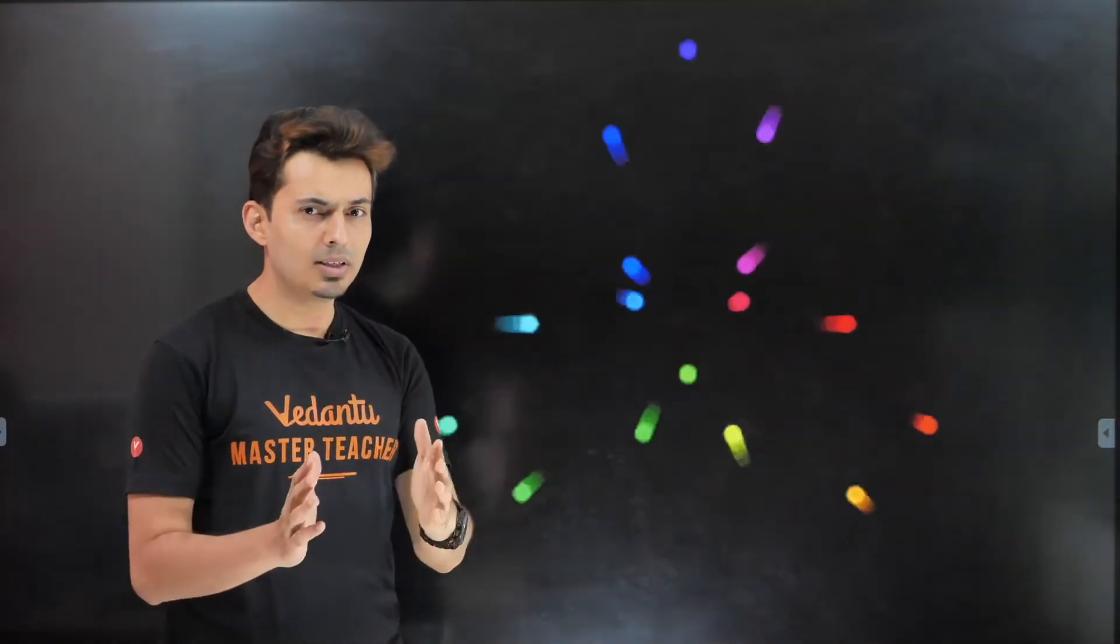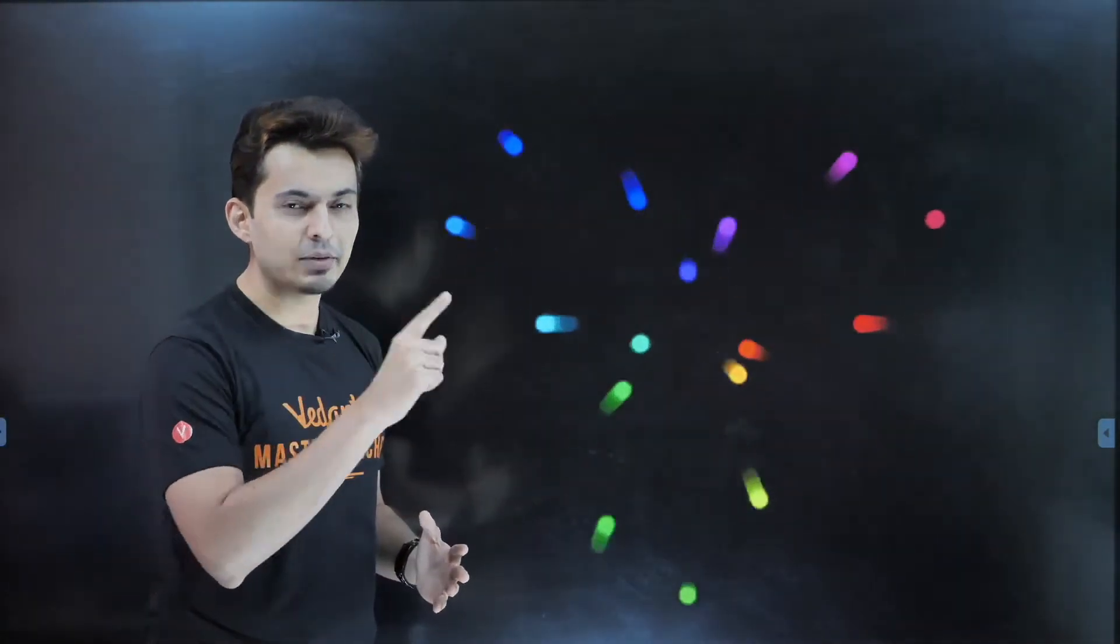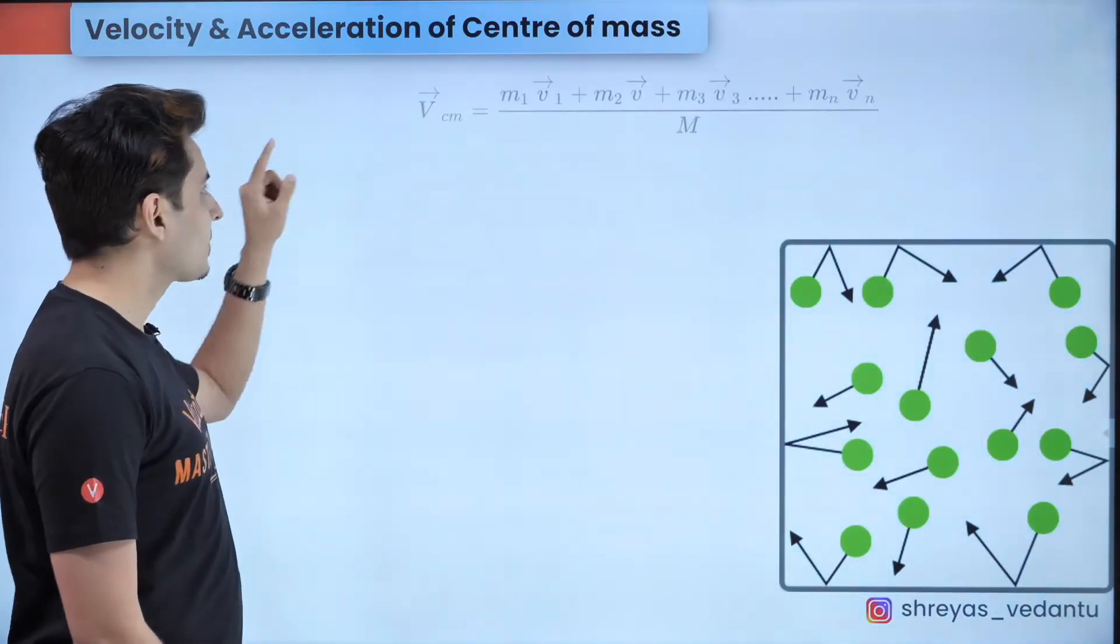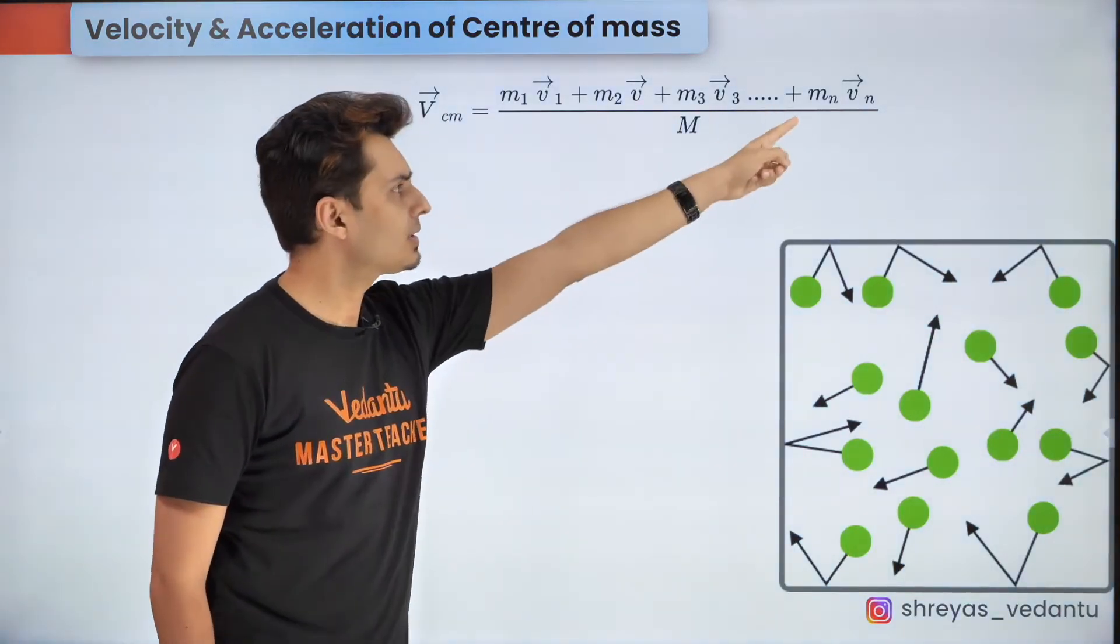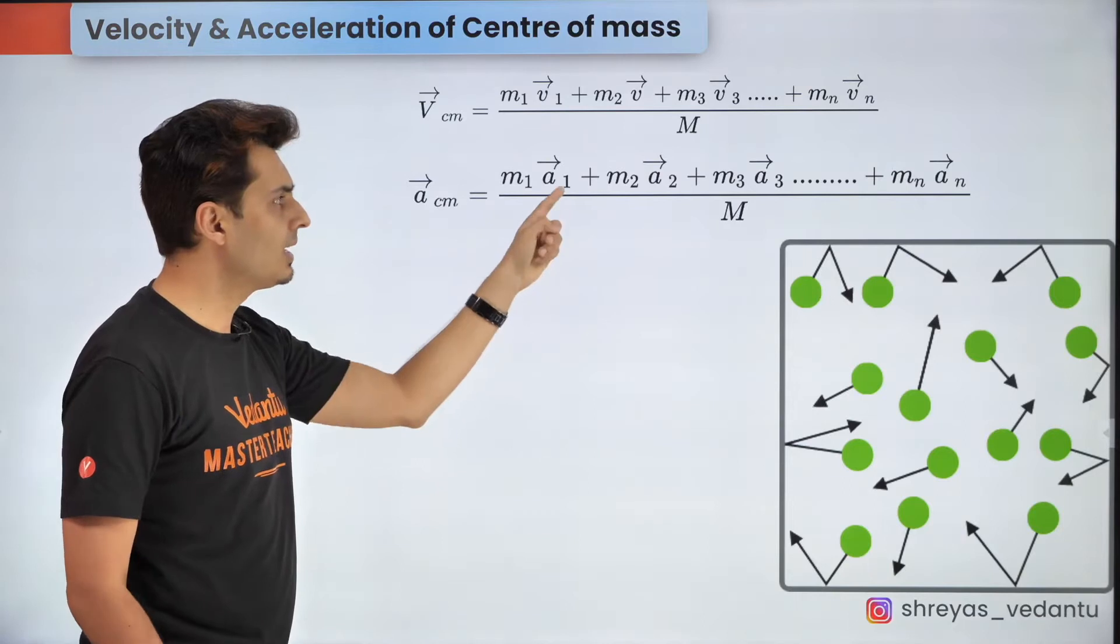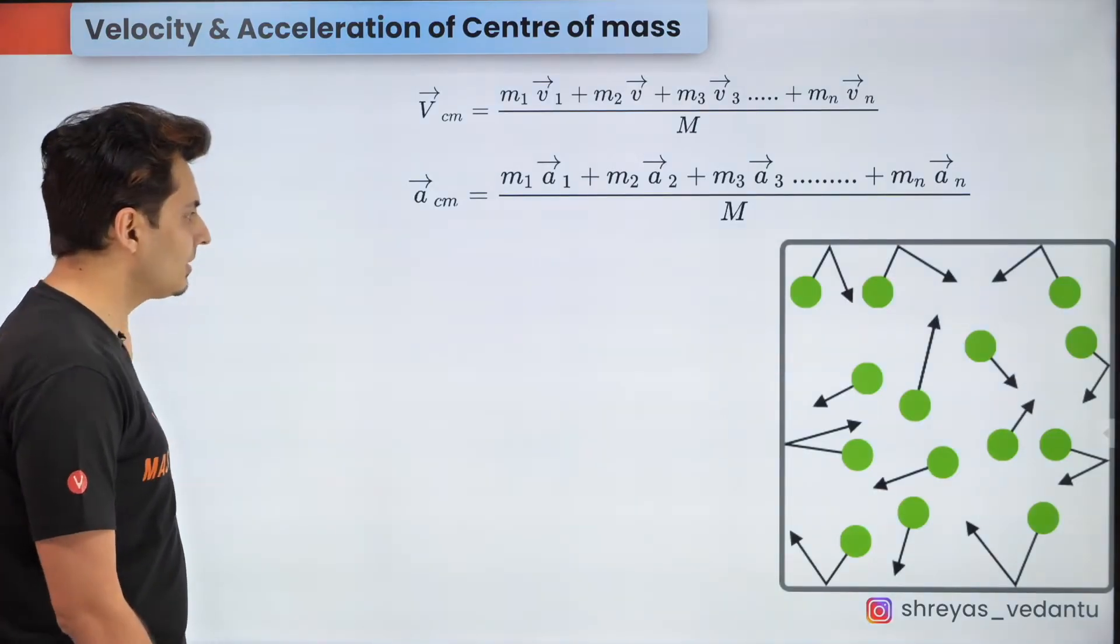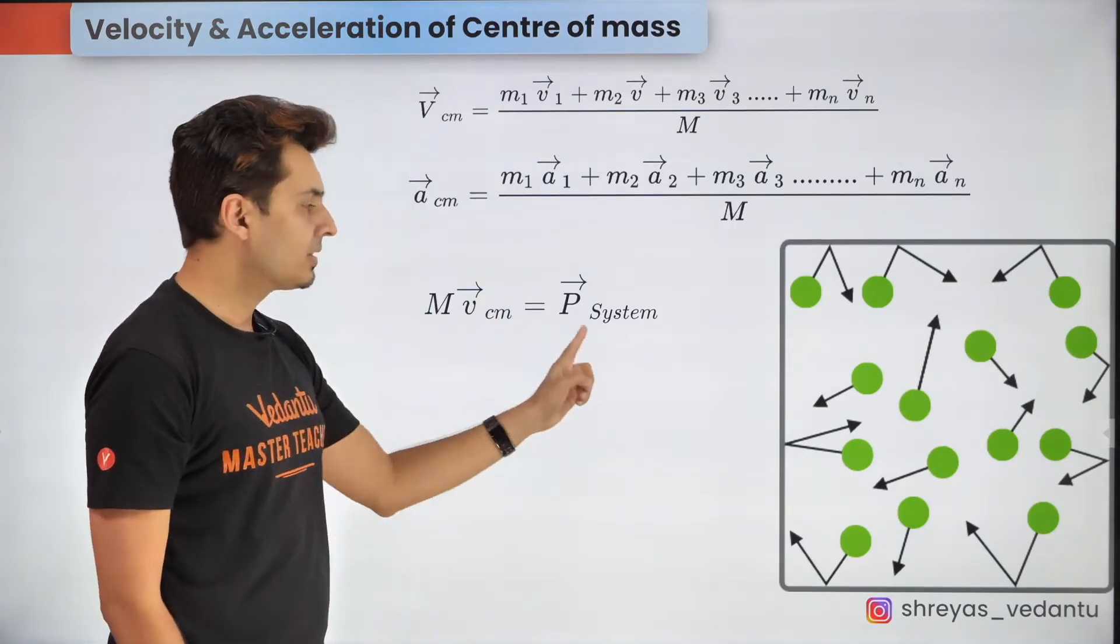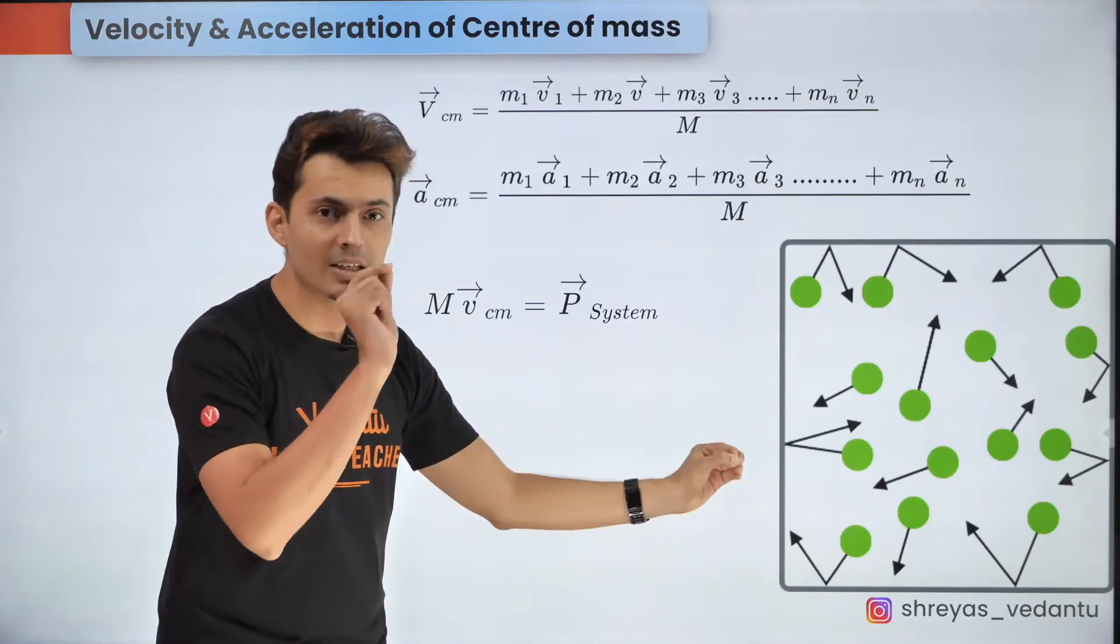If the particles of a system move obviously the center of mass of the system might also be in motion, in fact it might even accelerate. If the motion of the particles is known you can easily find out the velocity of the center of mass which is given by m1 v1 plus m2 v2 till the last term mn vn upon the total mass. Similarly you can also find the acceleration which is m1 a1 plus m2 a2 till the last term mn an upon the total mass and the momentum of the system is nothing but the total mass into the velocity of the center of mass. This total momentum is nothing but the vector addition of all the momentum of each particle.